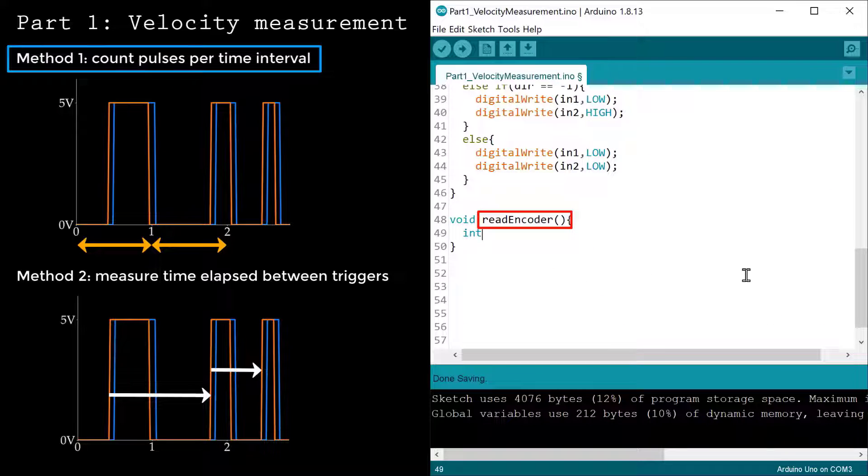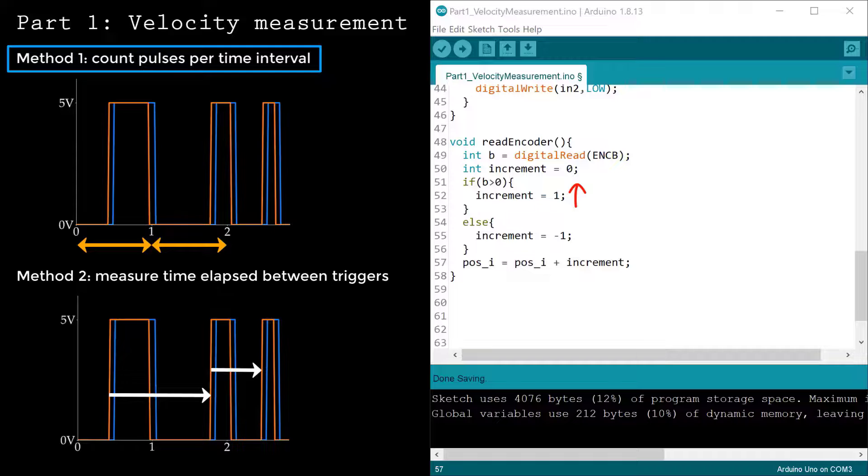Inside the readEncoder function, I'll iterate the global variable, poseI, forward or backward, depending on the logical value of encoder B.